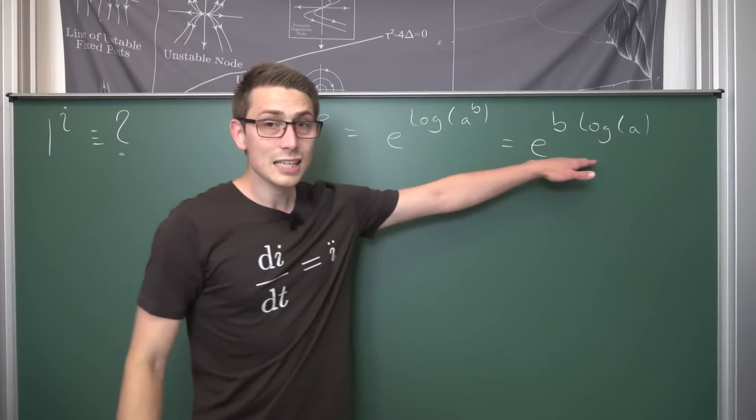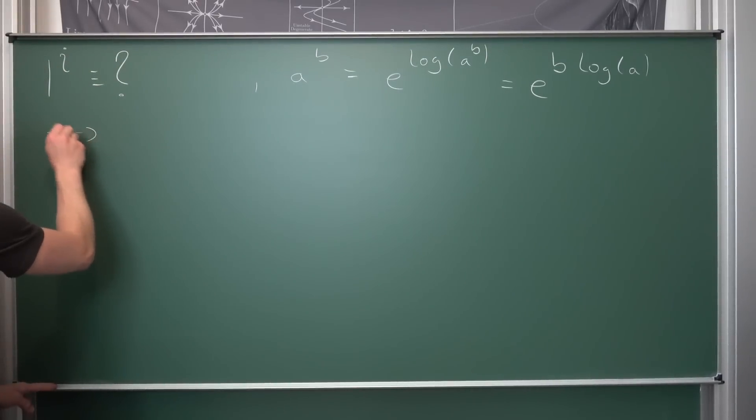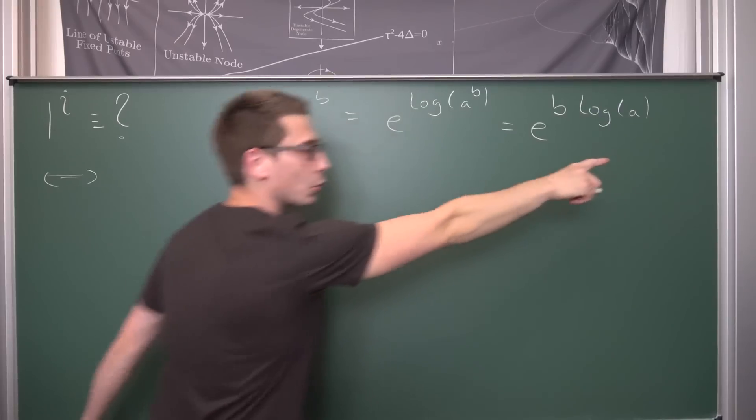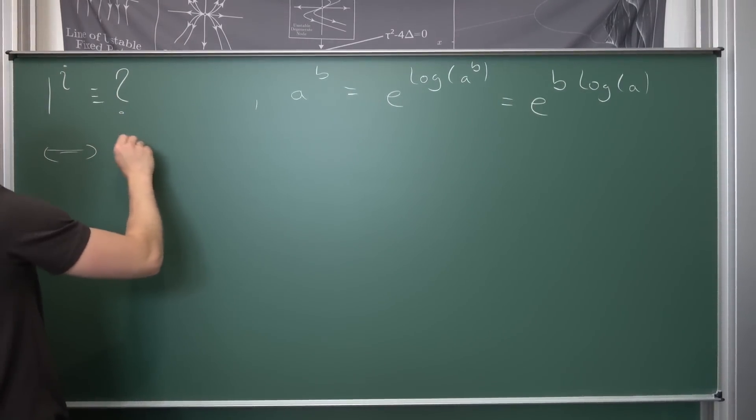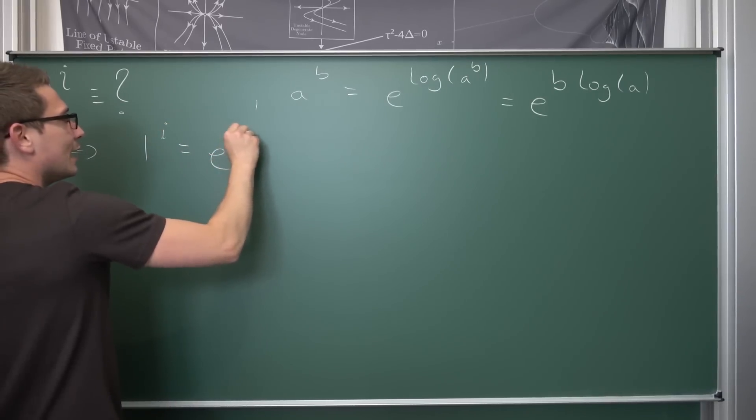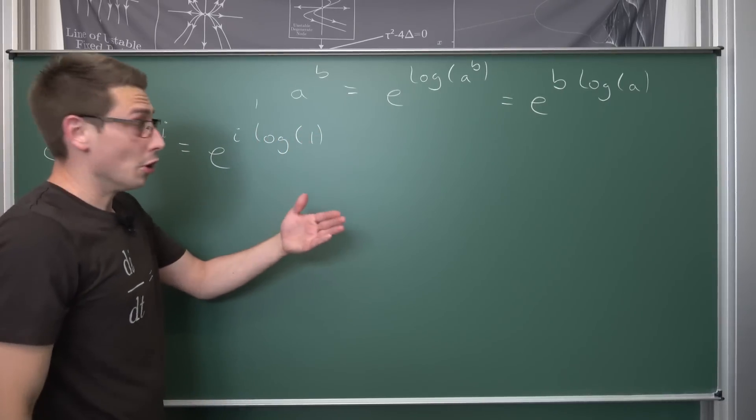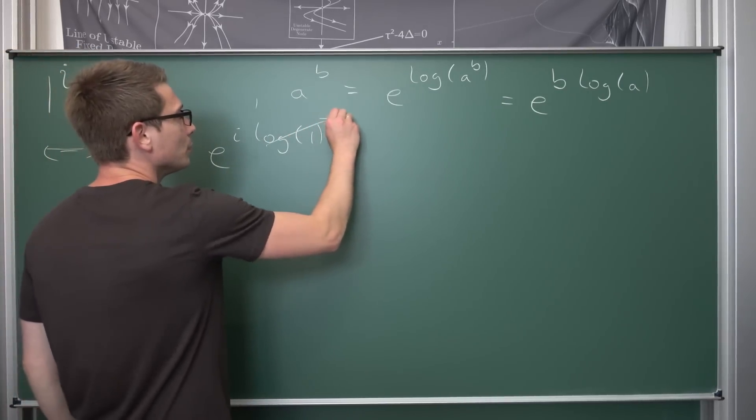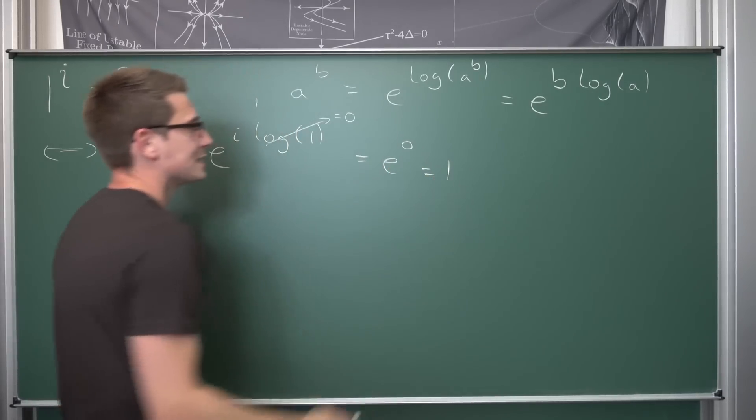And by the logarithm rules we can track the b to the front leaving us with e to the b times the natural log of a. And now if we apply this logic that we got right here to 1 to the i-th power, what we are going to get is that this right here is equivalent to saying, okay, dragging the 1 up here into the logarithm and our b in this case is going to be our i, we are going to get that 1 to the i-th power is nothing other than e to the i times the logarithm of 1.